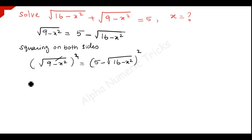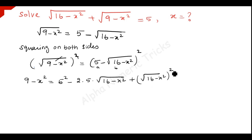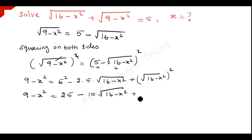This square root and this square get cancelled. So you have 9 minus x squared is equal to here the form a minus b, the whole squared: a squared minus 2 times a times b, where a is 5 and b is square root of 16 minus x squared, plus b squared. So you have 9 minus x squared is equal to 25 minus 10 times square root of 16 minus x squared, plus 16 minus x squared.